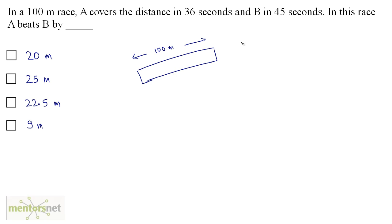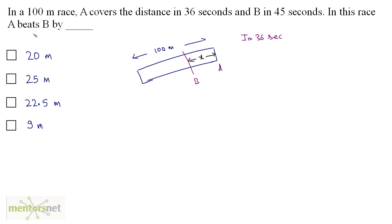This is our race course. In 36 seconds, A is at the end of the race course because he covers the distance in 36 seconds, and B is behind A because B is slower. So B is somewhere behind. We want this distance — let it be x — because we have been asked by how many meters does A beat B.